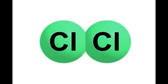Nitrogen and oxygen are the most abundant gases present in the atmosphere and are responsible for supporting the existence of all life forms on Earth. Hydrogen gas, however, is the most abundant gas present in the universe.